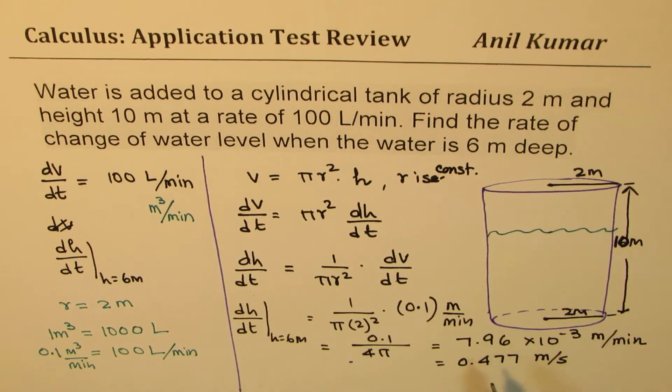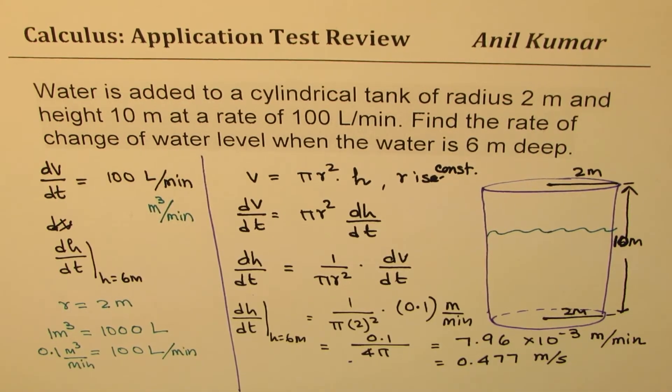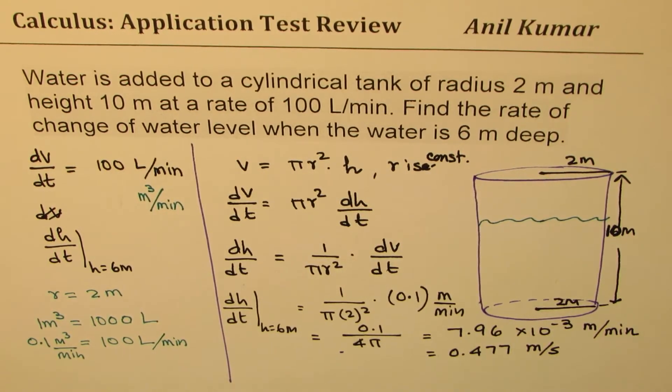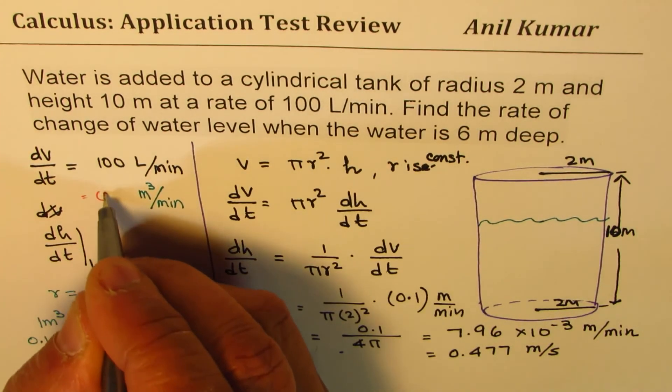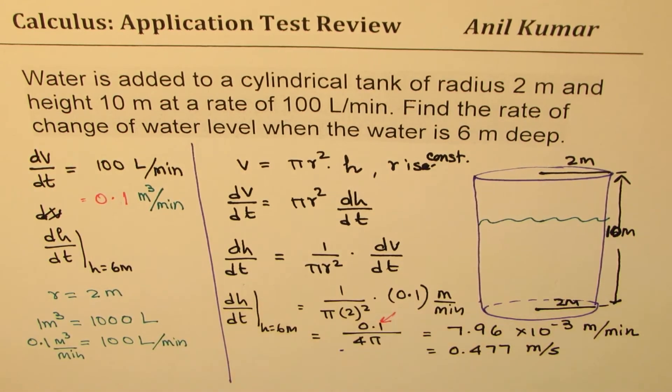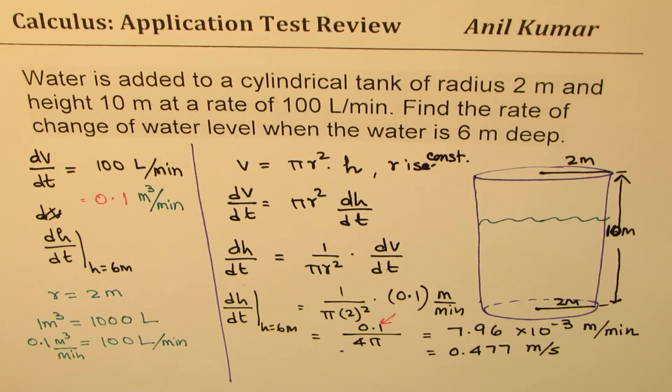So you could always do some conversion of units as convenient. However, most important thing to understand in this particular question is to take care of units. So this is, indeed, equal to 0.1 meter cube per minute. And that should be substituted here for rate of change of volume to find your answer. So I hope that point is absolutely clear. Feel free to write your comments and share your views. Thanks for watching and all the best.